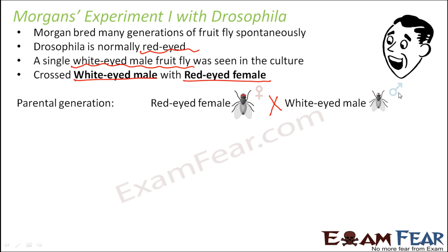In the F1 generation, all the flies produced were red-eyed. This proved that red eye color is dominant over white eye color, consistent with Mendelian laws. This was surprising for Morgan, who had previously criticized Mendel's laws, but seeing that F1 showed only the dominant trait made him reconsider.